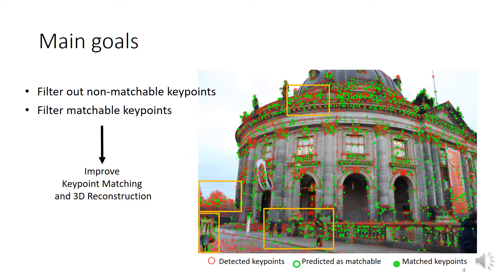For that reason, the main goals here were to filter out non-matchable keypoints and preserve matchable ones, in order to improve matching and 3D reconstruction in terms of accuracy and time efficiency. For example, as shown in the image, the final goal was to avoid the red points on the error-prone areas and keep only the green ones.